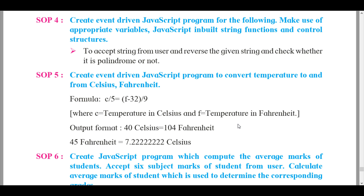So without further ado, let's start with SOP 5: create an event-driven JavaScript program to convert temperature to and from Celsius and Fahrenheit. The formula is C/5 = (F − 32)/9, where C is temperature in Celsius and F is temperature in Fahrenheit. The output format should be: 40 Celsius equals 104 Fahrenheit, and 45 Fahrenheit equals 7.222 recurring Celsius.